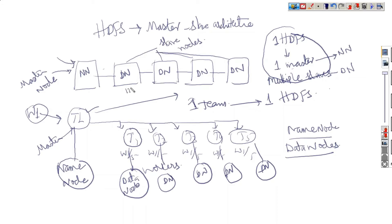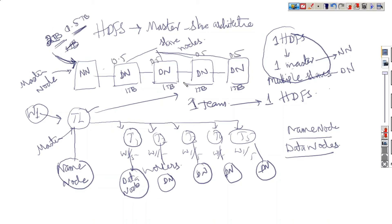Now if the size of each node is one TB — one TB, one TB, one TB, one TB, one TB — and we have two TB of data to load into this HDFS, we request the master name node. The name node will divide it into two parts: one TB and one TB. Automatic data division will be done by HDFS.